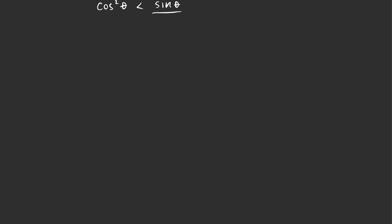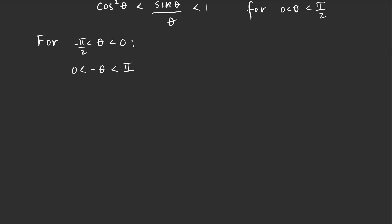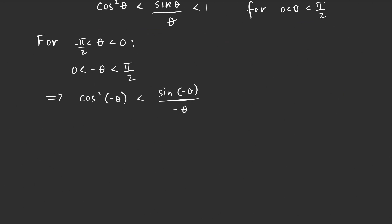So we've shown that cosine squared theta is less than sine theta over theta, less than one — but this holds for theta between zero and pi over two. Since we're looking for a two-sided limit, we also need to consider theta less than zero, specifically theta between negative pi over two and zero. For such theta, the negative of theta is between zero and pi over two, so the compound inequality applies to negative theta: cosine squared of negative theta is less than sine of negative theta over negative theta, less than one.